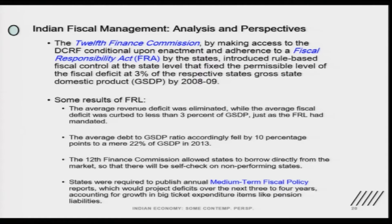The average revenue deficit was eliminated while the average fiscal deficit was curbed to less than 3 percent of GSDP, just as the FRL had mandated. Some states found that the revenue deficit they were targeting had disappeared. The average debt-to-GDP ratio accordingly fell by 10 percentage points after this adoption. The 12th Finance Commission also allowed states to borrow directly from the market with some kind of self-check, giving incentives to promote the FRA. States also had medium-term fiscal policy reports with rolling expenditure indicators for 3-4 year projections.